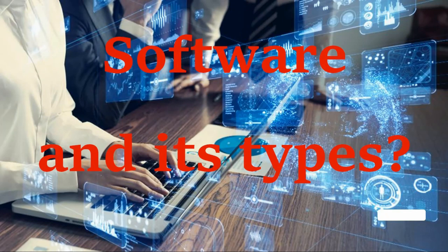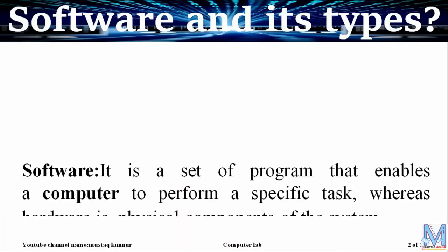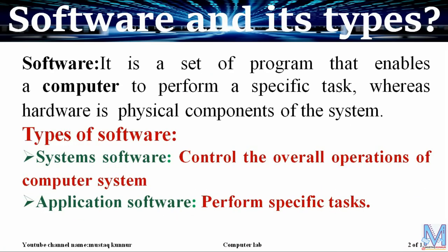Hello friends, welcome to my channel. Today I am going to explain about software and its different types. Software is a set of programs that enables a computer to perform a specific task, whereas hardware is a physical component. In order to make use of the hardware, we must install a software. Without software, we cannot use a computer or any mobile devices.